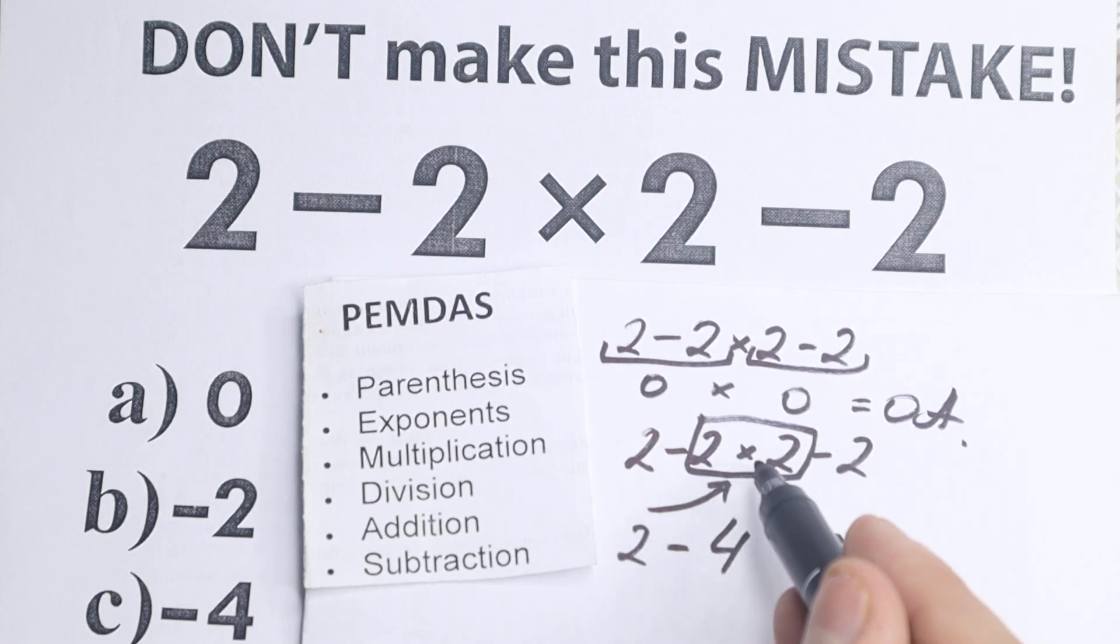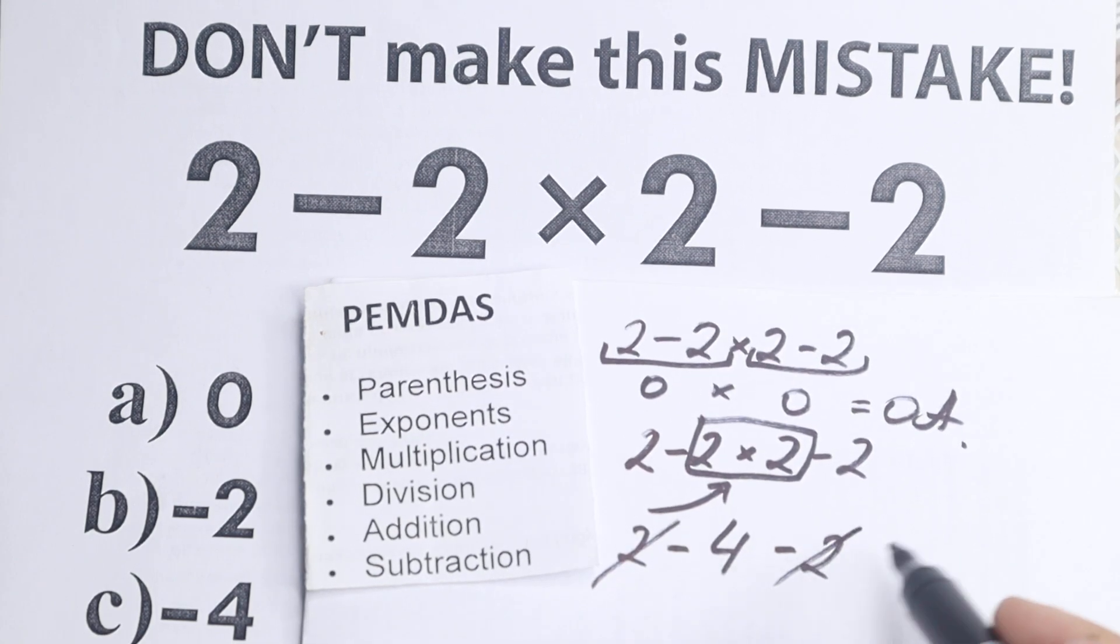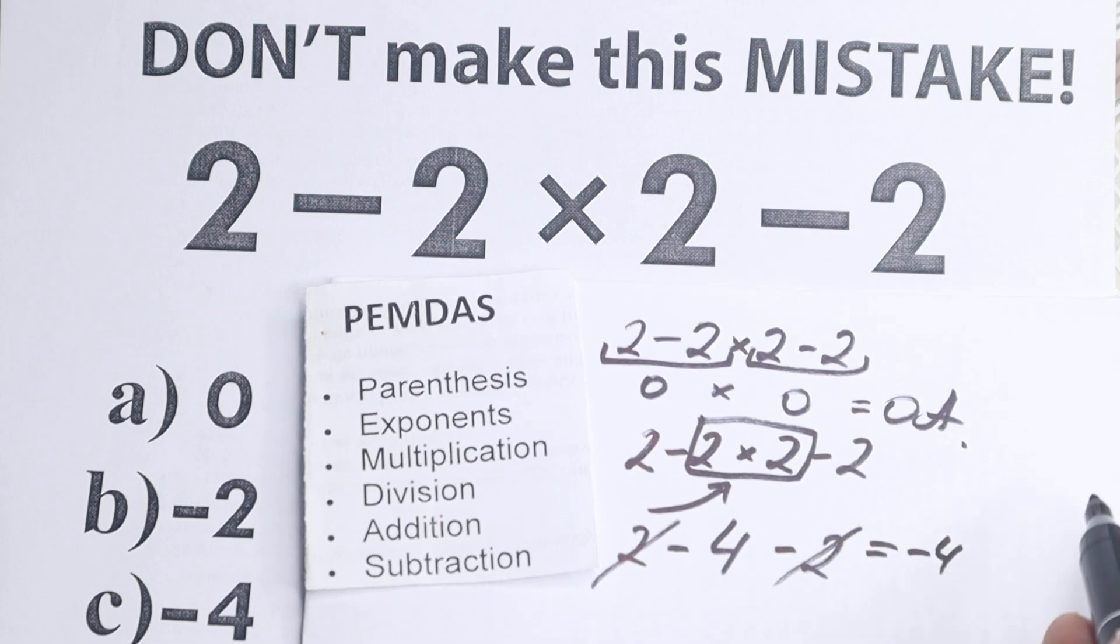A lot of students solve it like 0 × 0, which is absolutely incorrect. Here, we start with multiplication, then no division, no addition, and the last step is subtraction. We can easily subtract these two numbers. Or if you know a bit of algebra, you can see 2 - 4 - 2 equals -4. So our correct answer is -4.